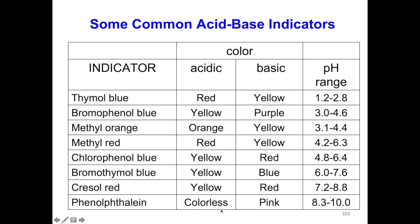The last one is phenolphthalein. It shows colorless in acidic and pink in basic. The colorless form of phenolphthalein starts to change to pink in the pH range of 8.3 to 10.0.